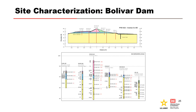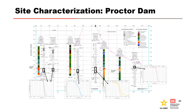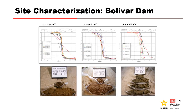It is paramount to have good site characterization drawings to scale to understand the piping path and continuity of materials susceptible to backward erosion piping beneath a roof-forming material. Examples from Bolivar Dam and Proctor Dam show how selected gradations included with boring data and embankment cross sections illustrate the presence of continuous susceptible materials. Pictures of soil samples along with gradation curves are also helpful for understanding susceptibility.